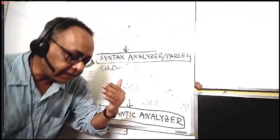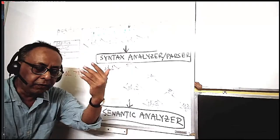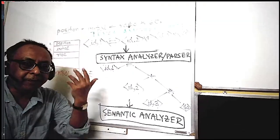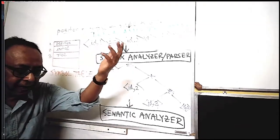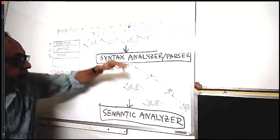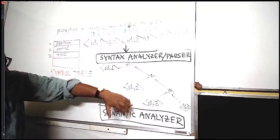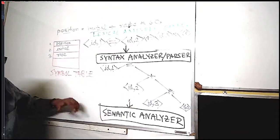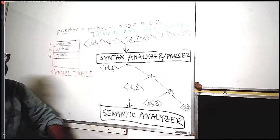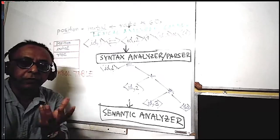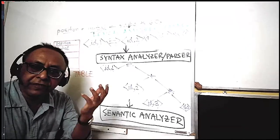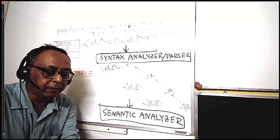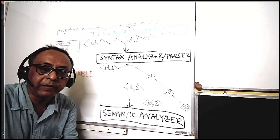Actually, in compiler construction there are at least two or three passes — like what I showed last day and extended — at least one, two, or three passes. Then, if everything is okay, your object file will be created.